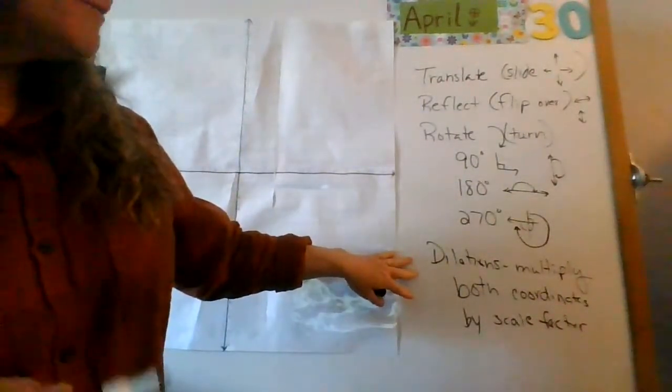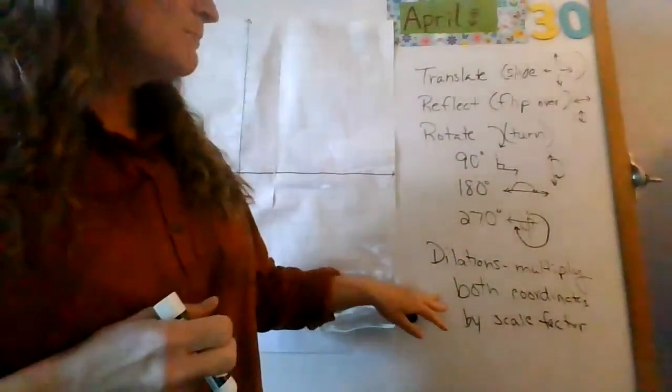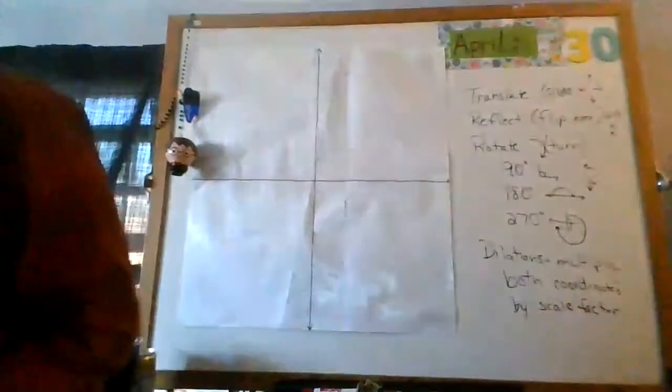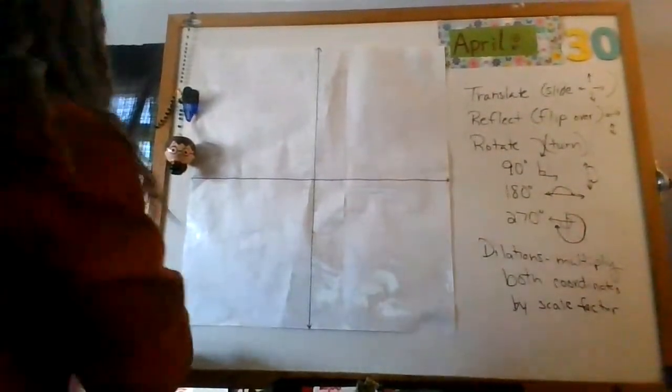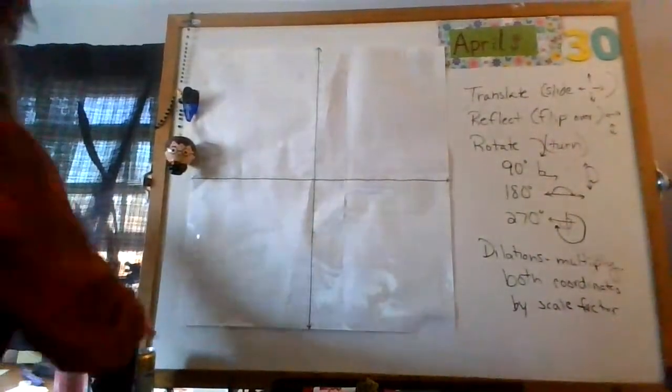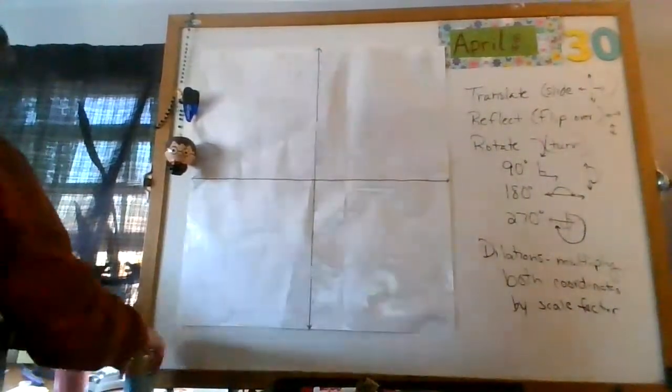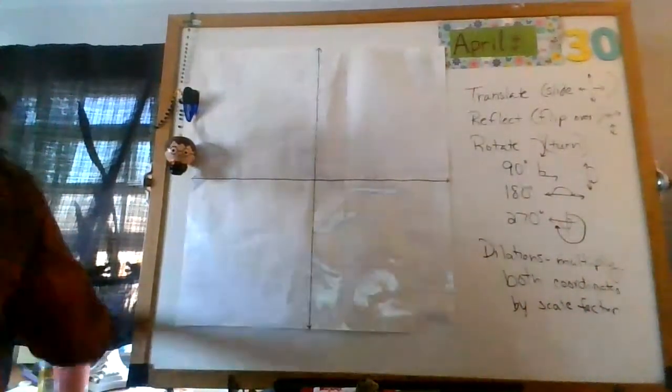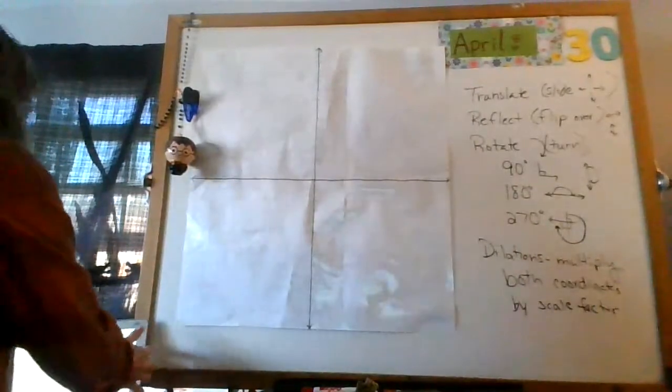Dilations means to multiply both coordinates by the scale factor, and we'll talk about that as we go. So, let's get started. It would be helpful if you got your graph paper out. As I told you yesterday, you will need graph paper.